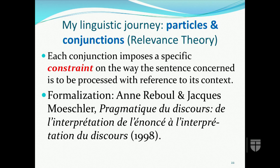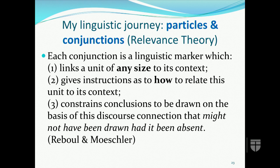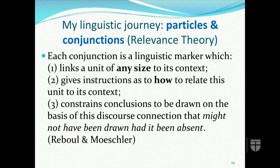This position was formalized in a 1998 book by Raboul and Mushler, in which they viewed each conjunction as a linguistic marker that: one, links a linguistic or discourse unit of any size to its context; two, gives instructions as to how to relate this unit to its context; and three, constrains conclusions to be drawn on the basis of the discourse connection that might not have been drawn had it been absent. So the use of a conjunction compared to asyndeton — meaning no conjunction — would narrow the range of interpretive possibilities.